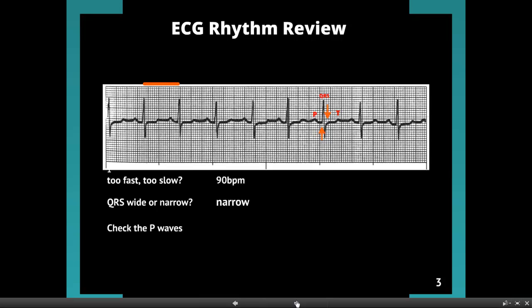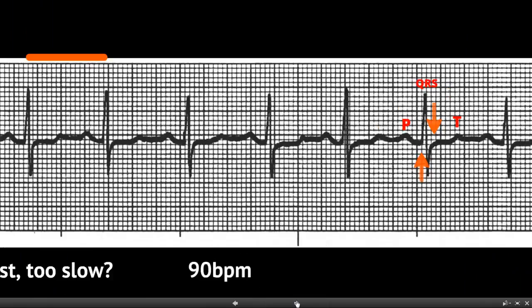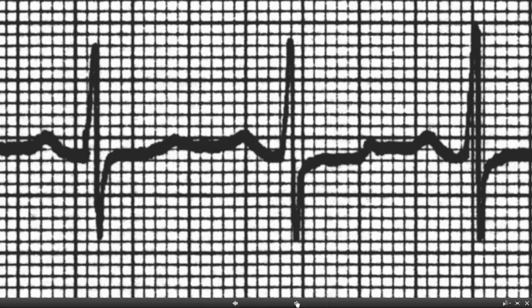Our next question: we're going to check the P-waves. Let's zoom in here. We have three complexes here. Take a look and see if you can find the P-waves — we've got three of them in here. Starting at the left, we've got one right there, one right in the middle, and one right there. They are present and they are in front of every QRS. They look pretty much the same, which tells us that the SA node, each and every time, is the one starting the contraction.